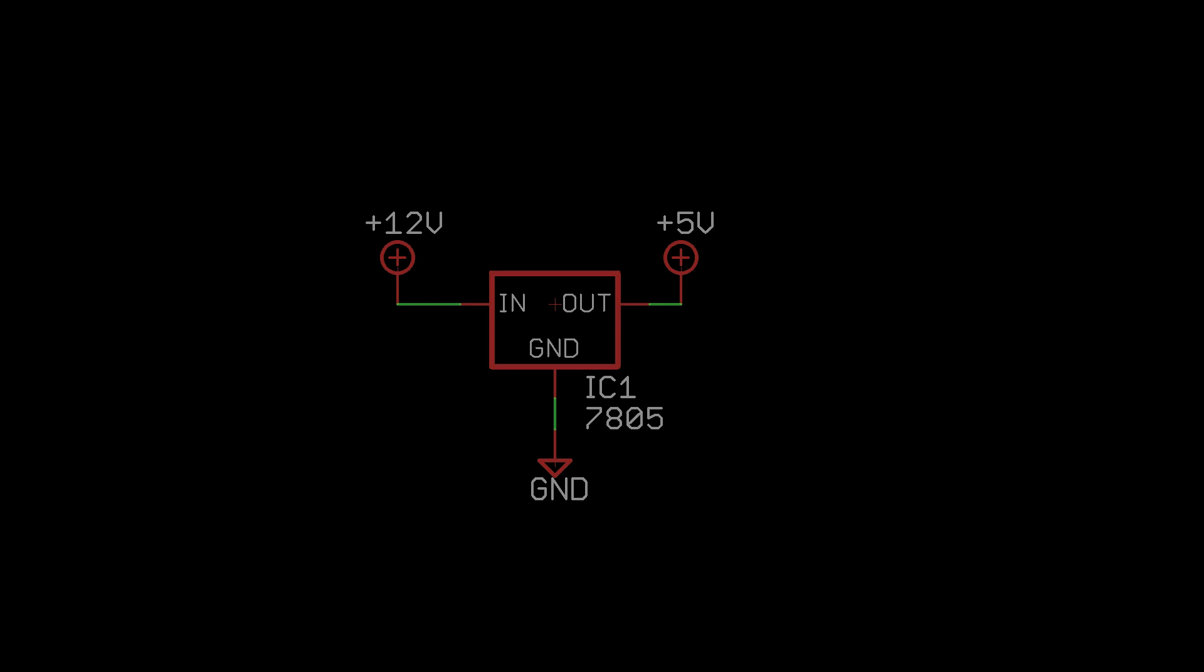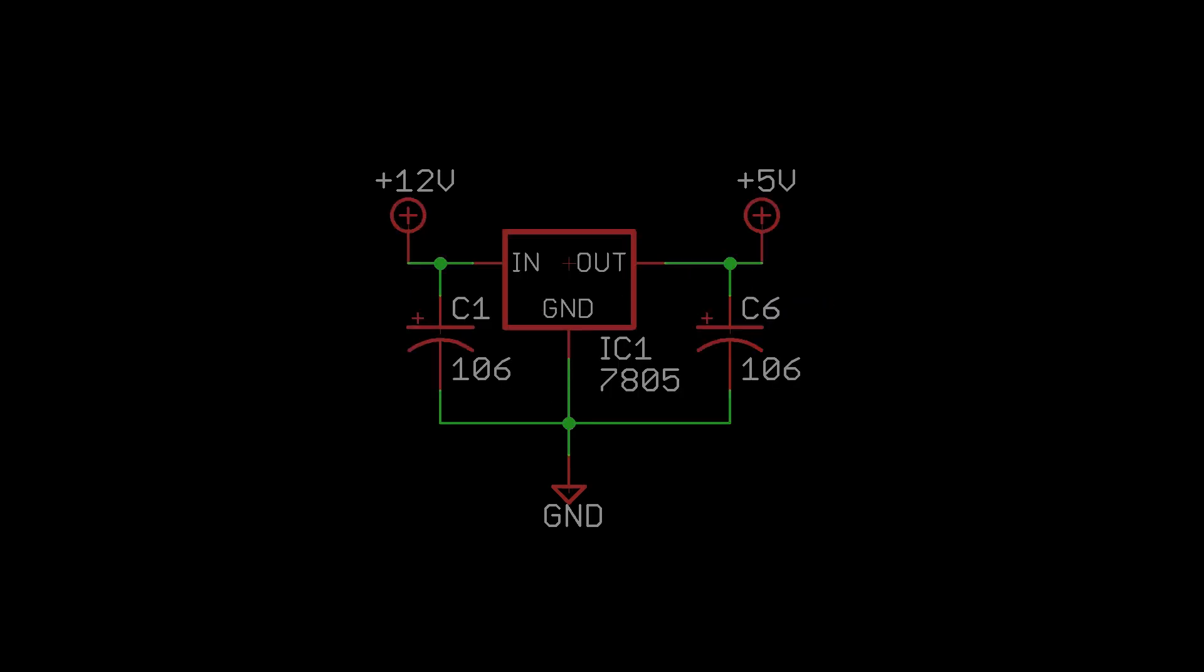Conceptually all you need is a voltage regulator. With 12 volts connecting to the input pin, ground connecting to the ground pin, and then you will have 5 volts coming out the output pin. In reality you also need some filter caps to make the regulator happy.